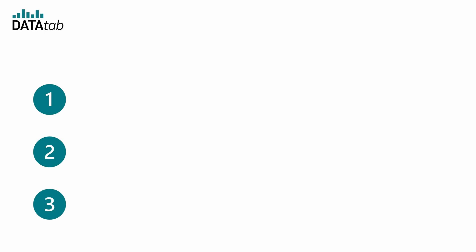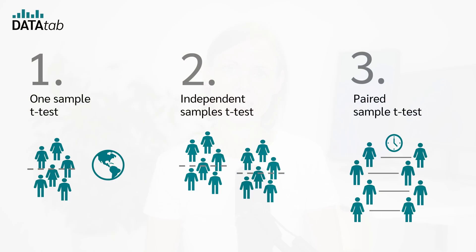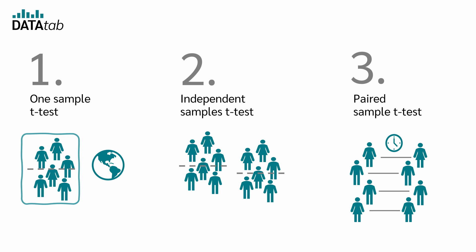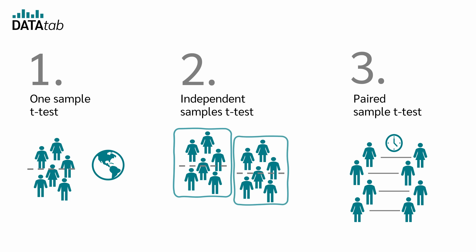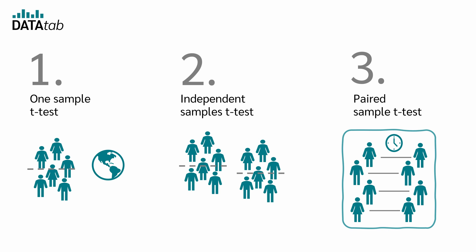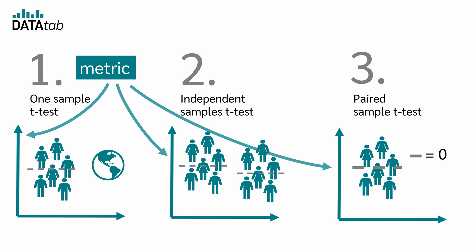The first point — the most obvious one — is that the assumptions for a t-test must be met, otherwise the results may be biased. What are the assumptions? We first need a suitable sample: in the one-sample t-test, a sample and a reference value; in the independent t-test, two independent samples; and in the paired t-test, a paired sample. The variable we want to test must be metric.